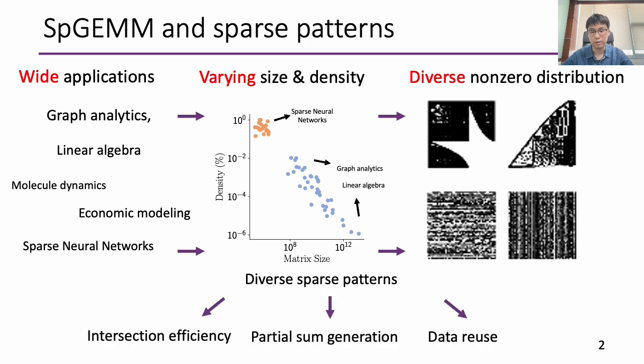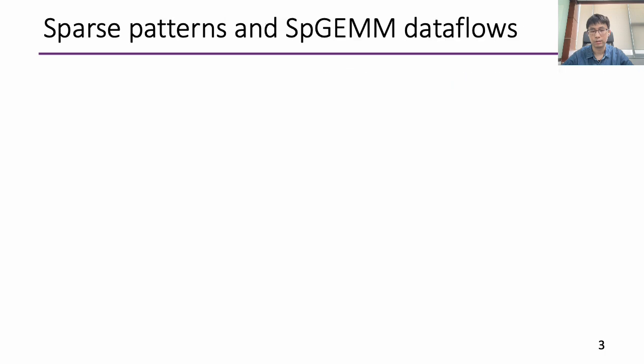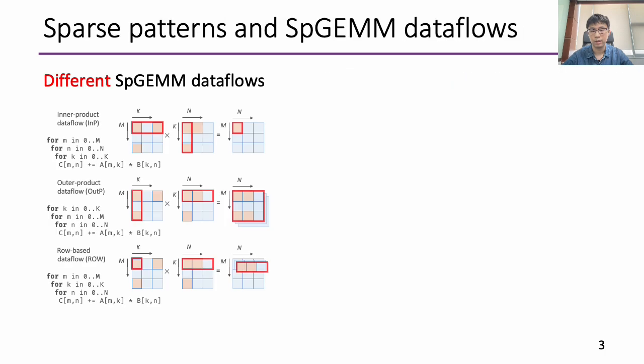These sparse patterns result in SpGEMM being executed with different intersection efficiency, partial sum generation, and data reuse. On the other hand, SpGEMM has different execution data flows. For example, inner product, outer product, and row-based.